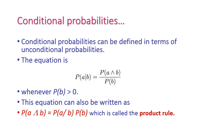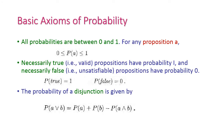The basic axioms of probability are: all probabilities lie between 0 and 1 for any proposition A, written as 0 ≤ P(A) ≤ 1. A necessarily true (satisfiable) proposition has probability 1, and a necessarily false (unsatisfiable) proposition has probability 0, written as P(true) = 1 and P(false) = 0. The probability of disjunction is P(A ∪ B) = P(A) + P(B) − P(A ∧ B).